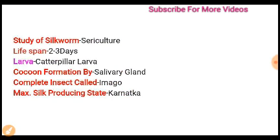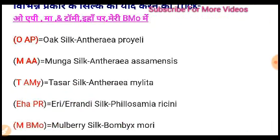The first thing about the silkworm — a little bit about the silkworm. First, we looked at the basics. The silkworm is a sericulture. It has been two to three days of life. It has been called Larva, then Cocoon Formation, then Salivary Gland. The whole insect is called Imago. The maximum silk production state is called Karnataka. The trick of the silkworm can be remembered in the last 5 minutes.